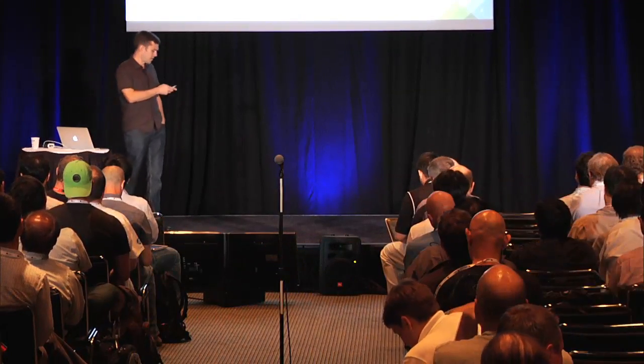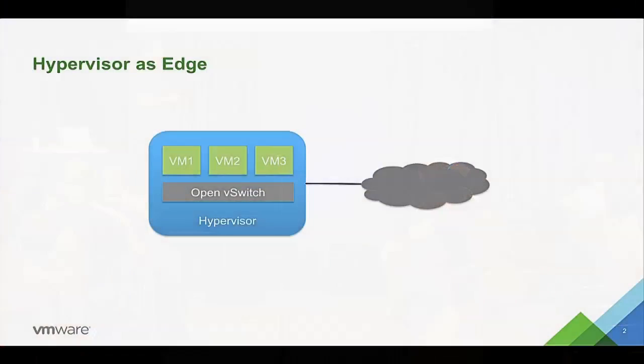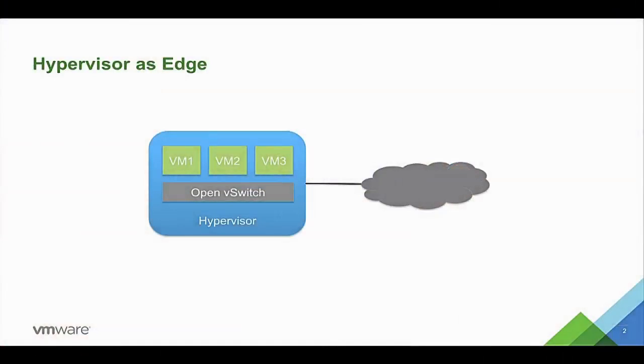Hi, my name is Justin Pettit, one of the core developers on the Open vSwitch project. I'm here to talk about Open vSwitch and the Intelligent Edge. For the purpose of this discussion, we are going to call the Edge the hypervisor. You can see in this diagram you have the virtual machines running inside the hypervisor with OVS, and this constitutes the Edge before it sends packets out into the greater network.